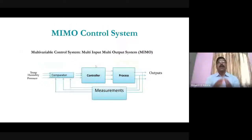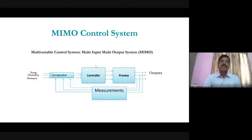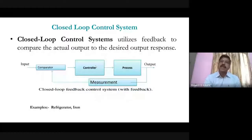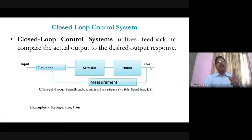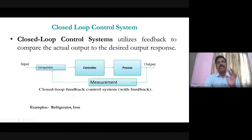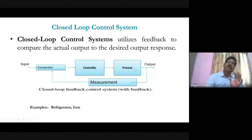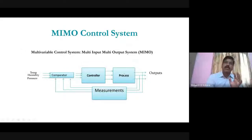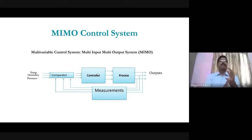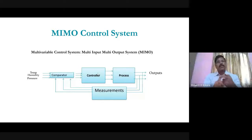Now let's discuss MIMO — what it means — and what is SISO. SISO means single input, single output. This kind of system has a single input and a single output. But in process industries, you may want to control several variables simultaneously — temperature, viscosity, humidity, pressure, and so on. Is it possible to use the same controller to control all those parameters, perhaps using time-division multiplexing? Yes, it is highly possible.